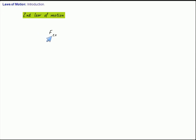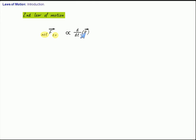What does the second law of motion say? The second law of motion says that the net external force acting on an object or a system is proportional to the rate of change of momentum of your system. You know that the momentum of the system is nothing but mass times velocity vector.